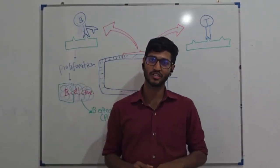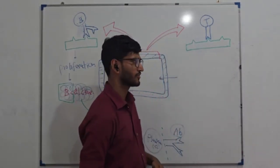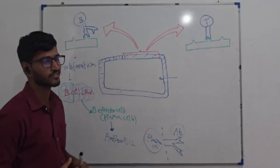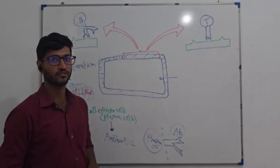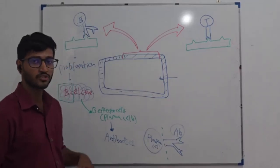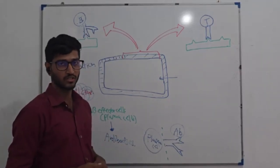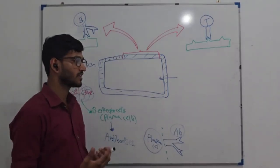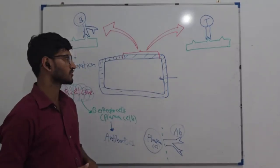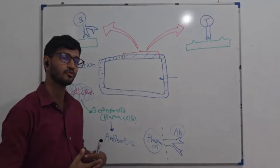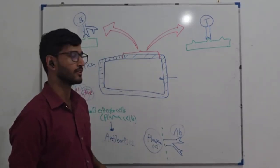Hi students, welcome to Smart Biology doubt clearance session. As most of you have requested, one of the most difficult sections for exams is immunity - under that, adaptive immunity is one of the most difficult sections. Today I am going to talk about B cell mediated immunity or humoral immunity, along with antigens, antibodies, and monoclonal antibodies.